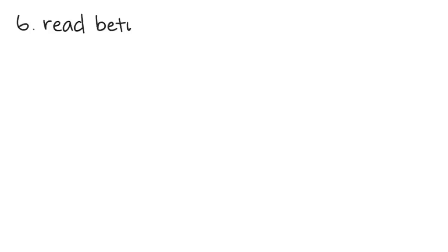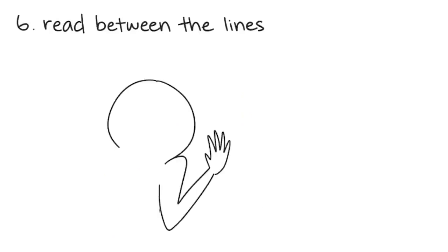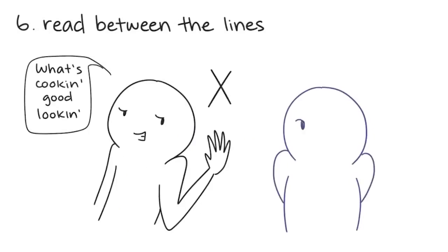Number 6. Read between the lines. Introverts are very subtle, so they're not usually outwardly flirtatious. The way they communicate is very nuanced. Pay close attention to what they say and how they say it too. Sometimes even the smallest phrases can have large meanings behind them.